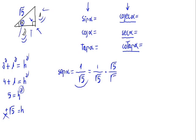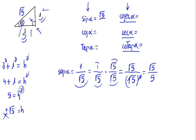To get the final result, we have to rationalize: multiplying by the square root of 5 over the square root of 5, so we can eliminate the square root in the denominator. This gives us the square root of 5 divided by the square root of 5 squared — the root and the square cancel — and the sine of alpha equals the square root of 5 divided by 5.